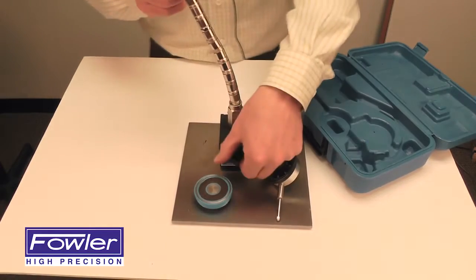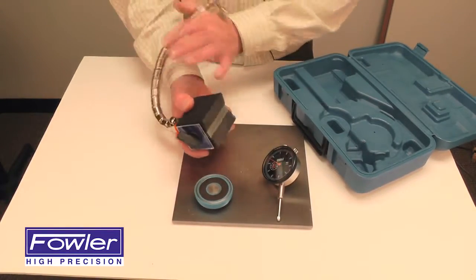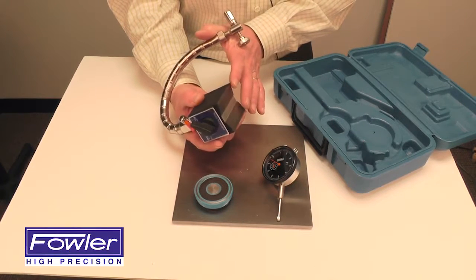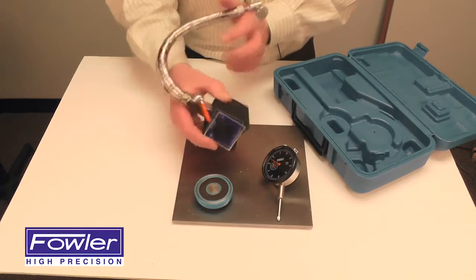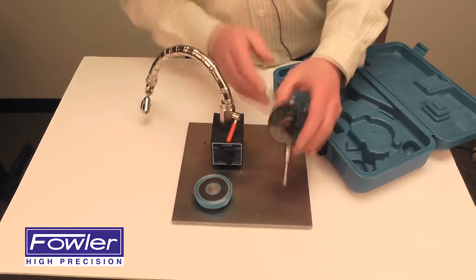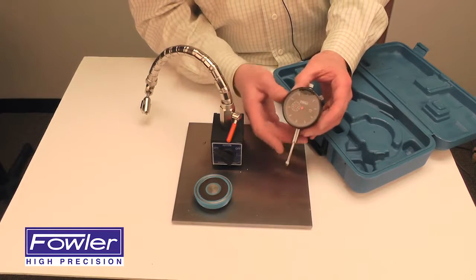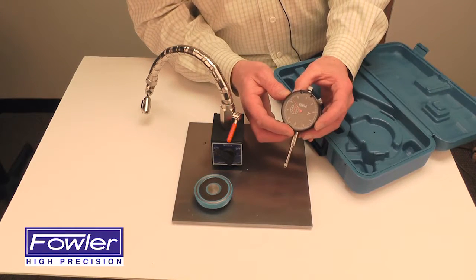It also features a ground base for flat surfaces as well as a V-groove for cylindrical surfaces. The indicator is a one-inch travel, group 2 blackface dial indicator graduated in one-thousandths of an inch.